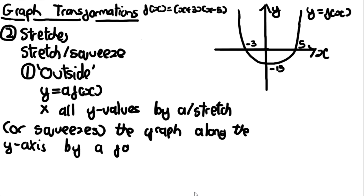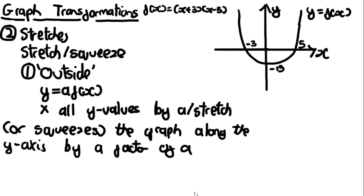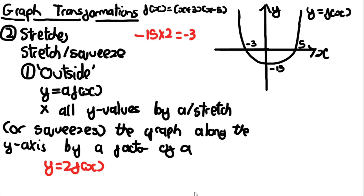Let's do an example using f(x) = (x+3)(x-5), the same quadratic as before. Let a = 2, so y = 2f(x). We multiply all y values by a, so the transformed y-intercept is -15 times 2 which is -30. The new y-intercept is somewhere down here, and sketching the graph stretched by 2, it looks something like this, where this point is -30.